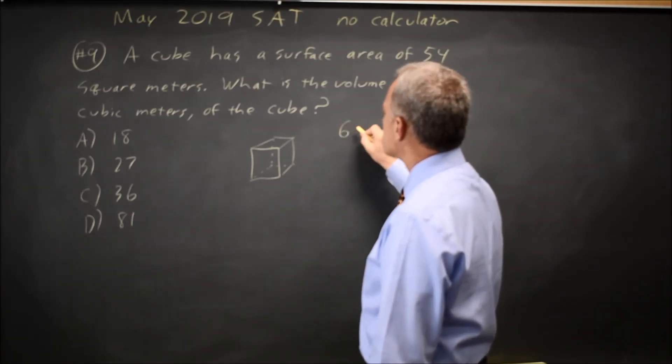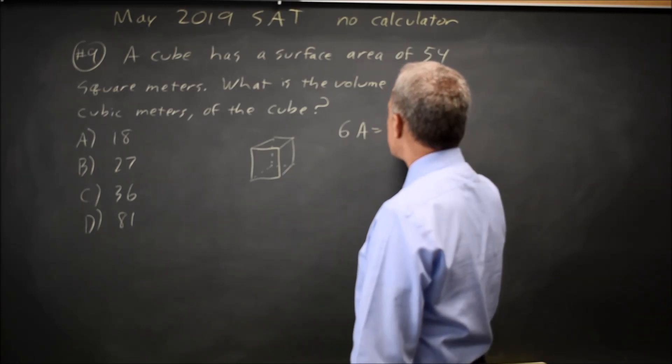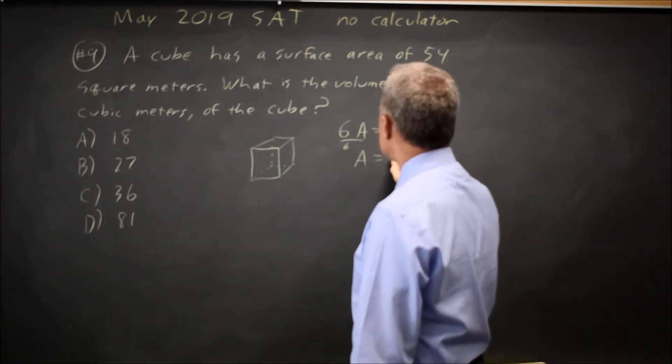So 6 times the area of a side equals 54. So the area of a side is 54 over 6, which is 9.